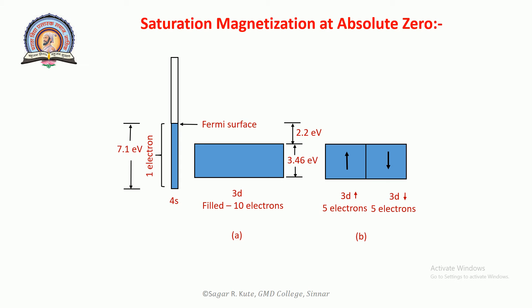Nickel has an excess of 0.54 electrons per atom having spin preferentially in one direction. Figure a and b show the systematic relation of 4s and 3d bands in metallic copper. The 3d band holds 10 electrons per atom and is filled. The 4s band can hold 2 electrons per atom and is shown half filled. Copper has one valence electron outside the filled 3d shell.